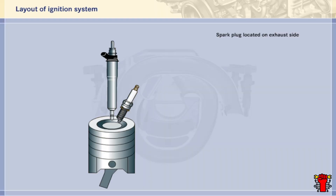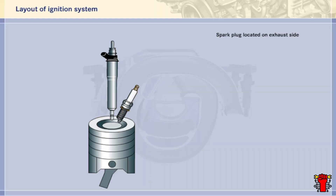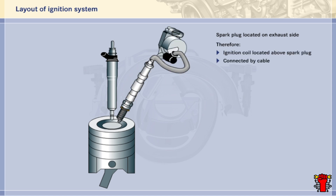The spark plug on the DE engine, unlike on the KE engine, is not positioned centrally above the cylinder — it is now located on the exhaust side. This also means that the ignition coil has had to move: instead of being connected directly to the spark plug, it is positioned above it and connected to it by means of a cable.